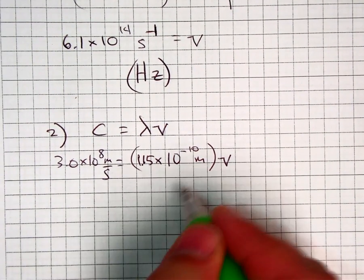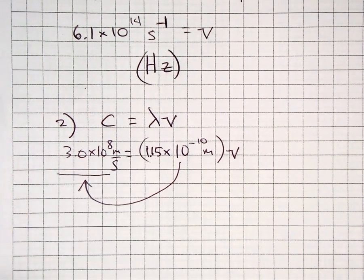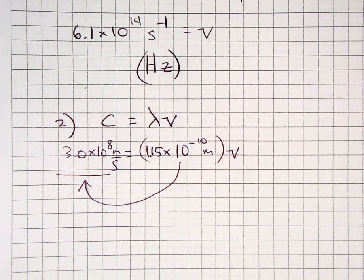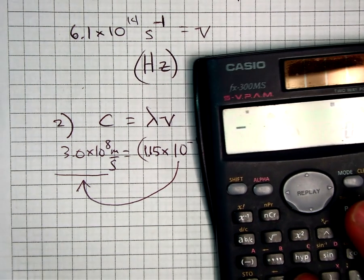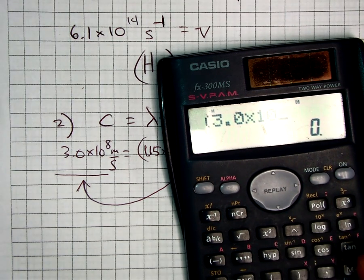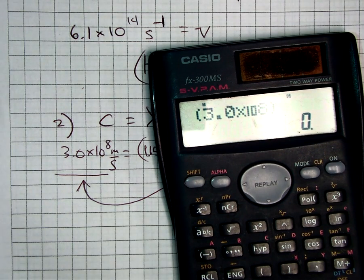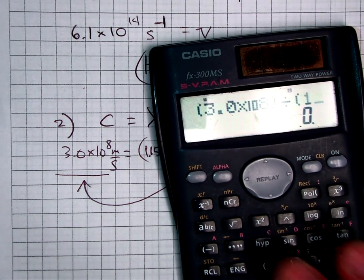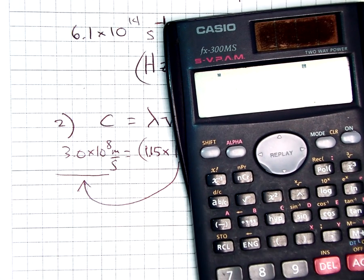So, again, mathematically speaking, without all those steps I did in number 1, this has to move from this side over here. It has to go underneath it. It gets divided on both sides. And that way it cancels out on the right, but now it's on the bottom on the left-hand side. So, once again, we have a division problem. We have 3.0 times 10x to the 8th power, divided by 1.15 times 10 raised to the negative 10th power. Close my parentheses. Hit enter.